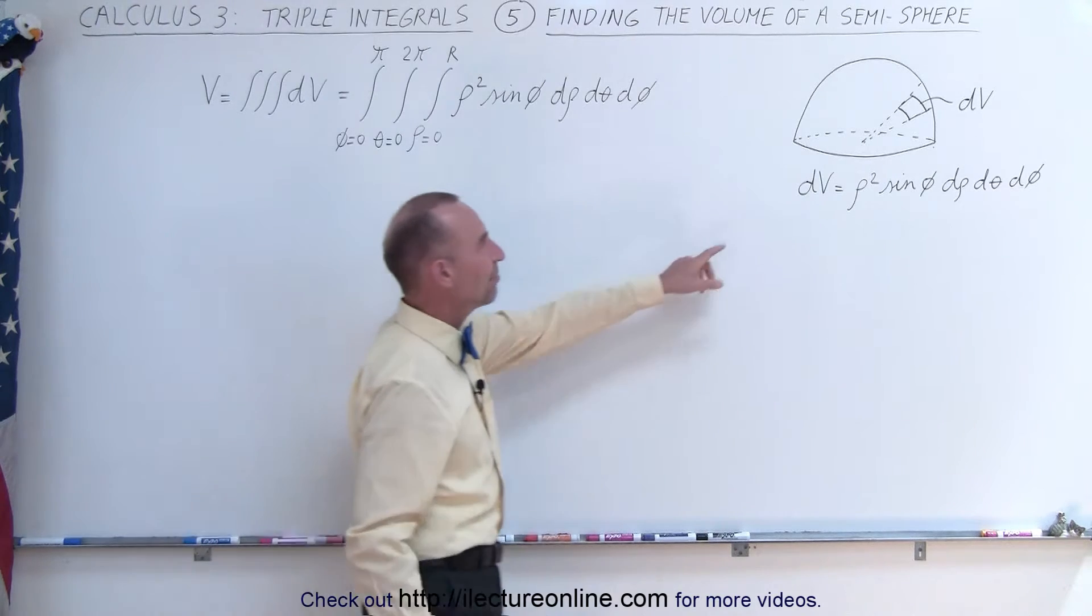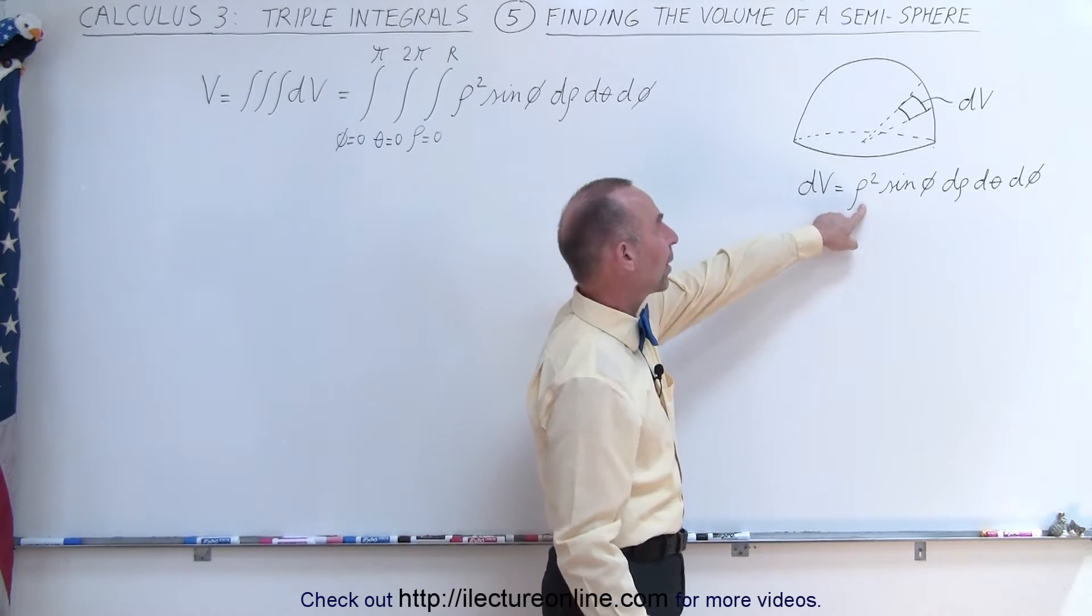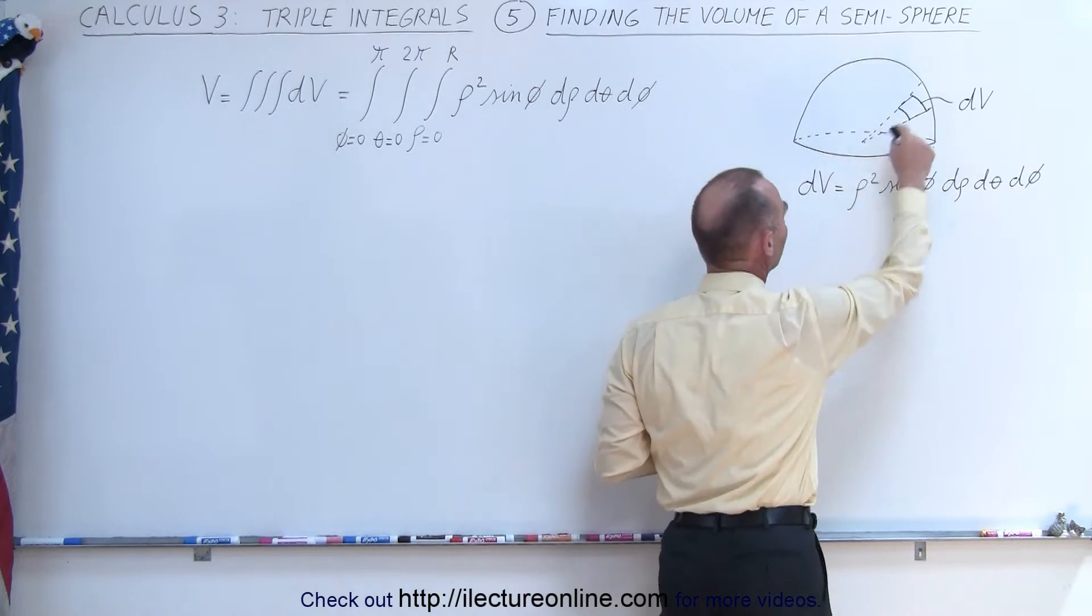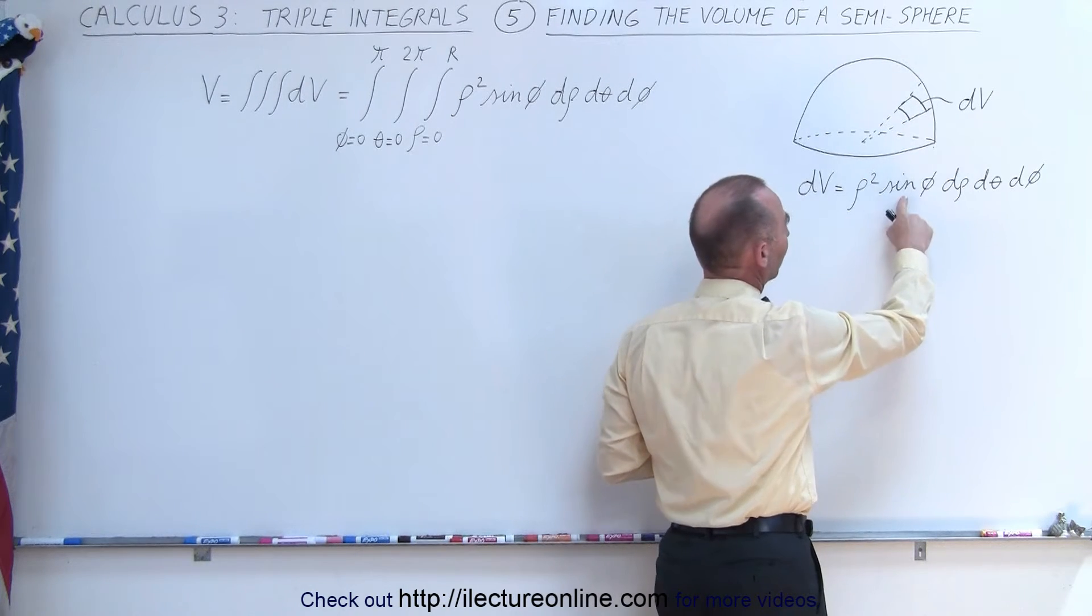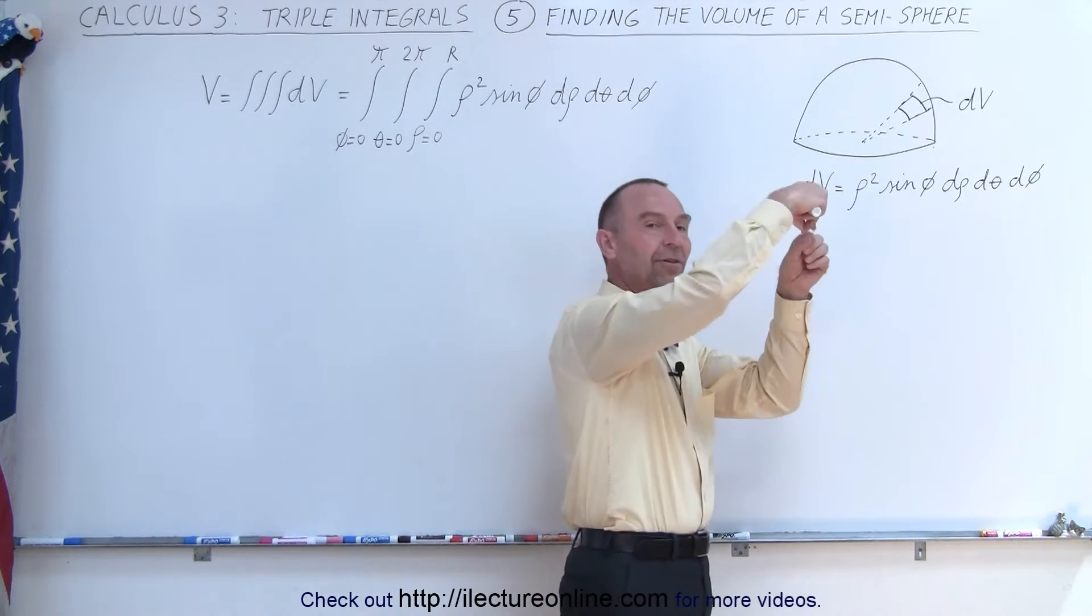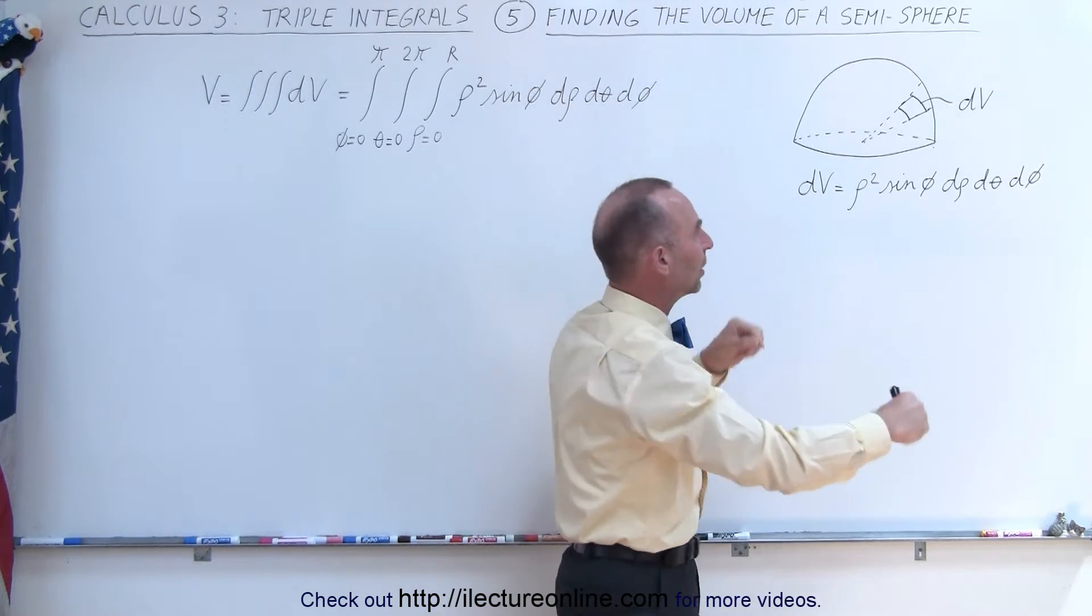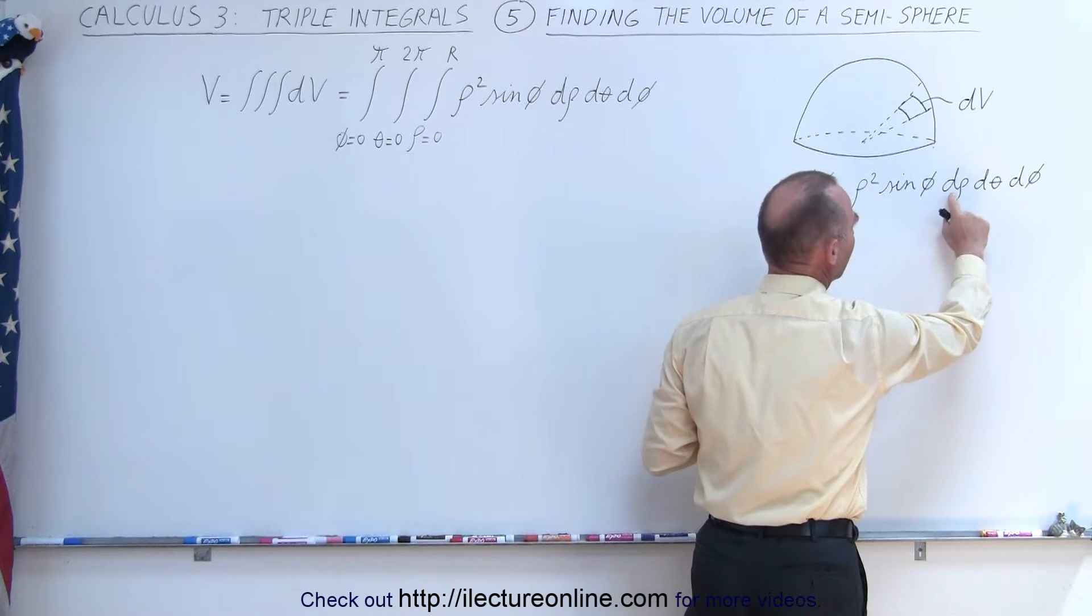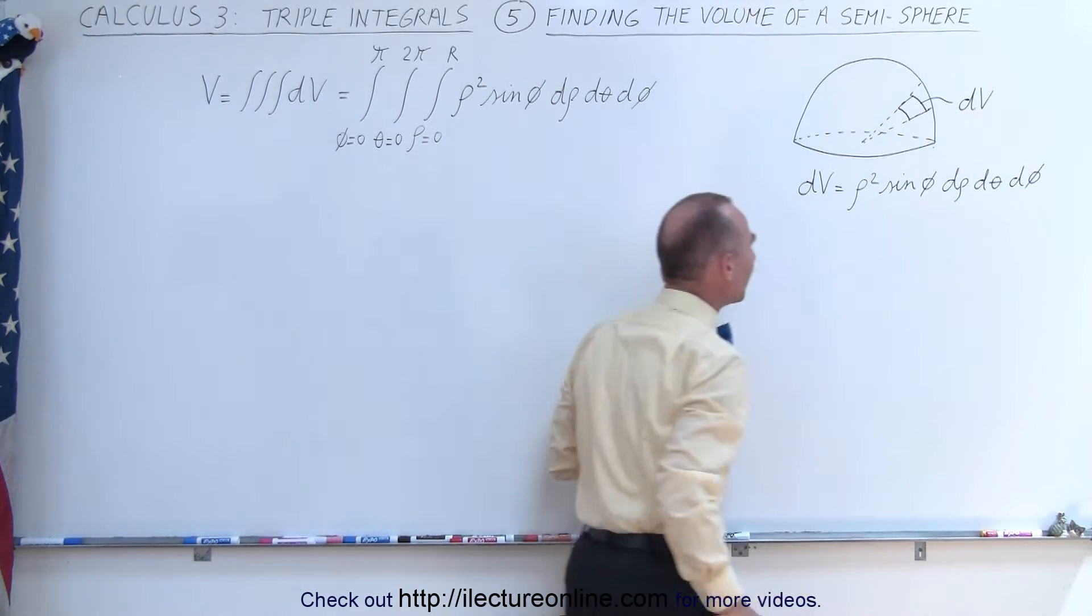So we have a dV indicated to be rho squared. Rho, of course, is the distance from the center point of the sphere to the edge, times sine of phi, because the element gets skinnier at the top and bottom and wider at the middle, times d rho, d theta, and d phi.